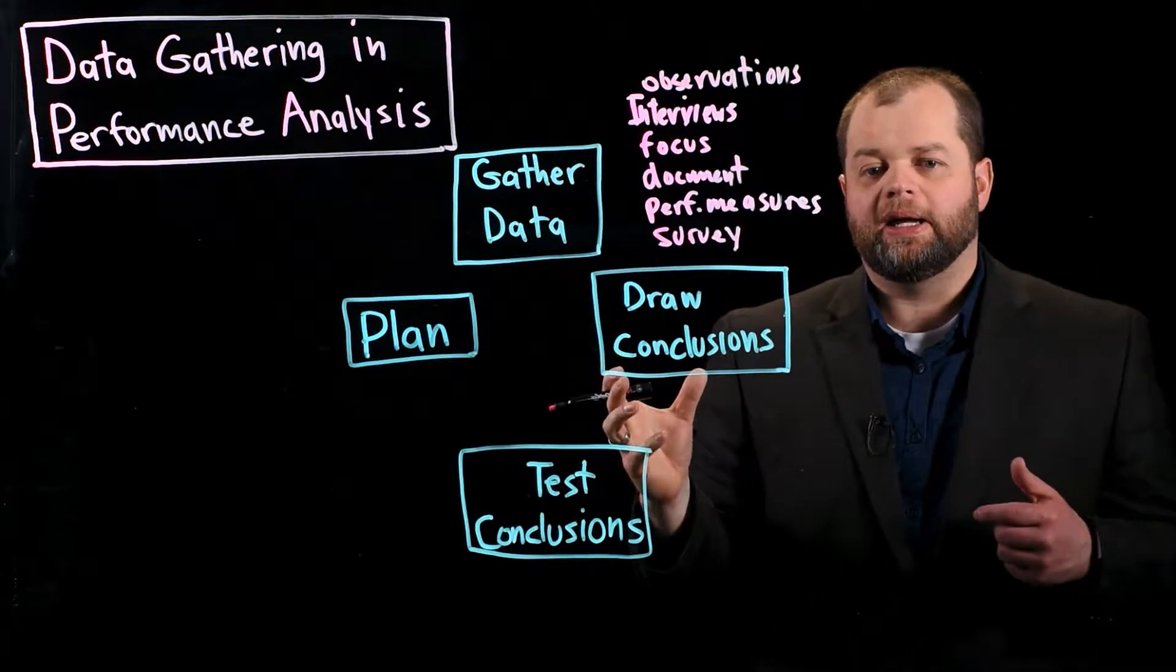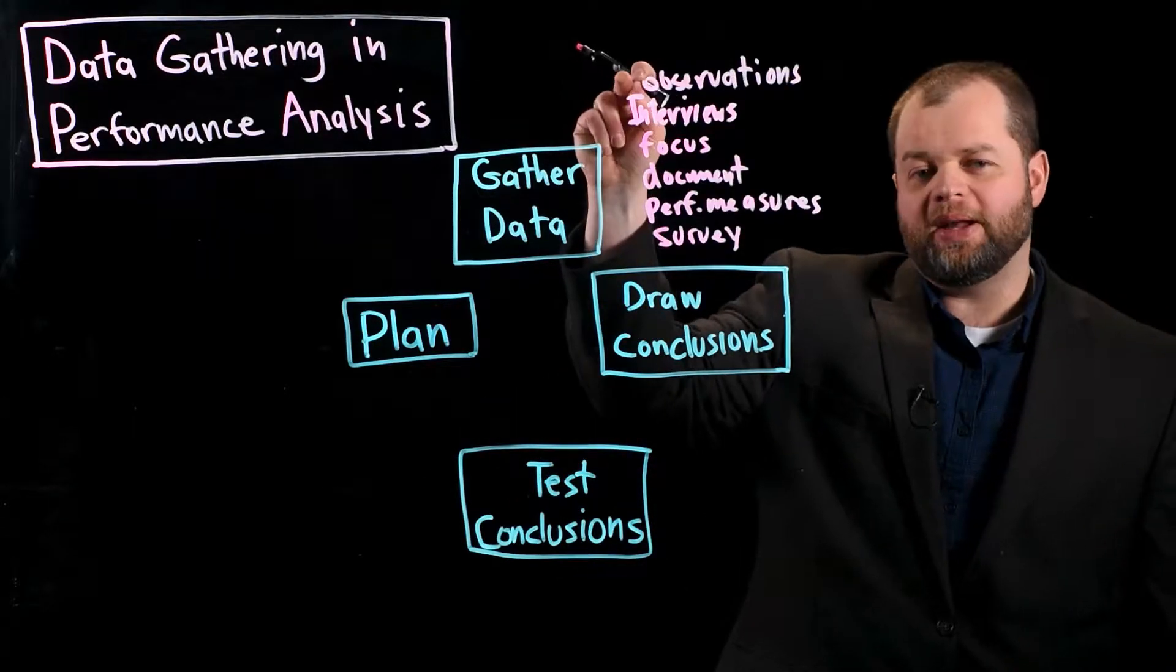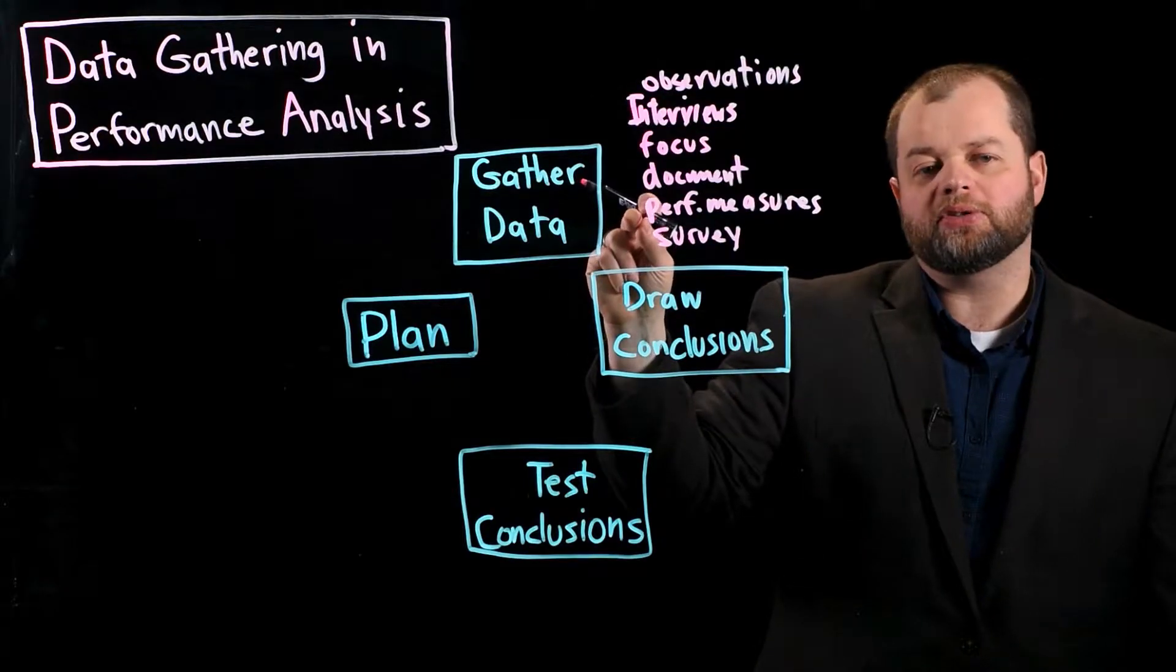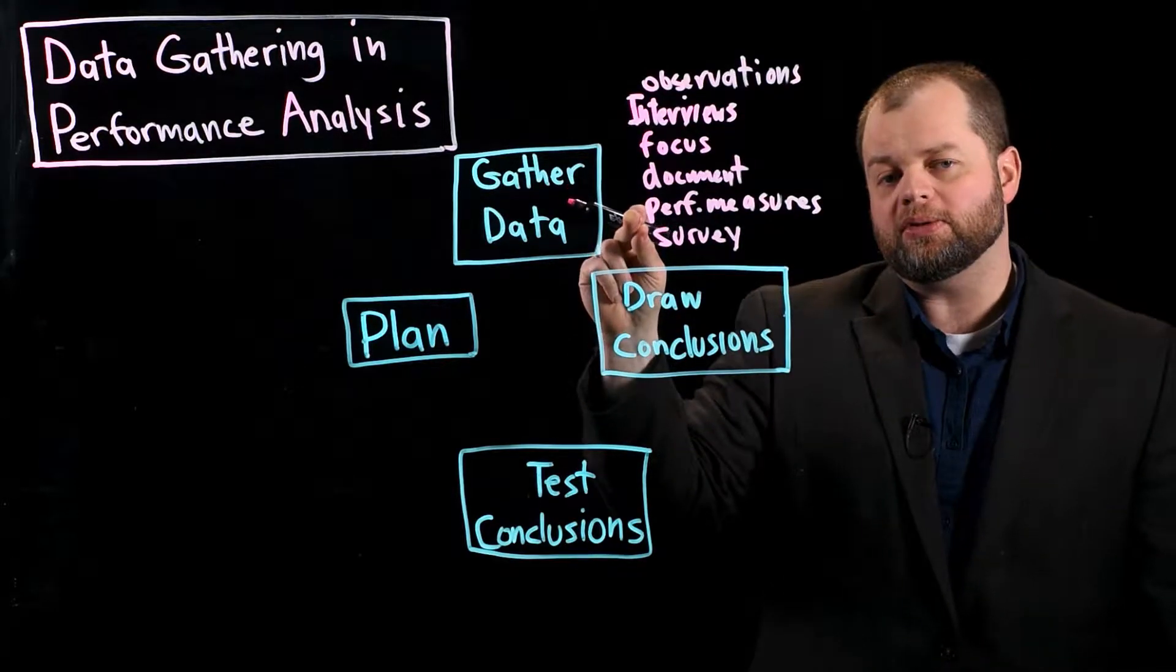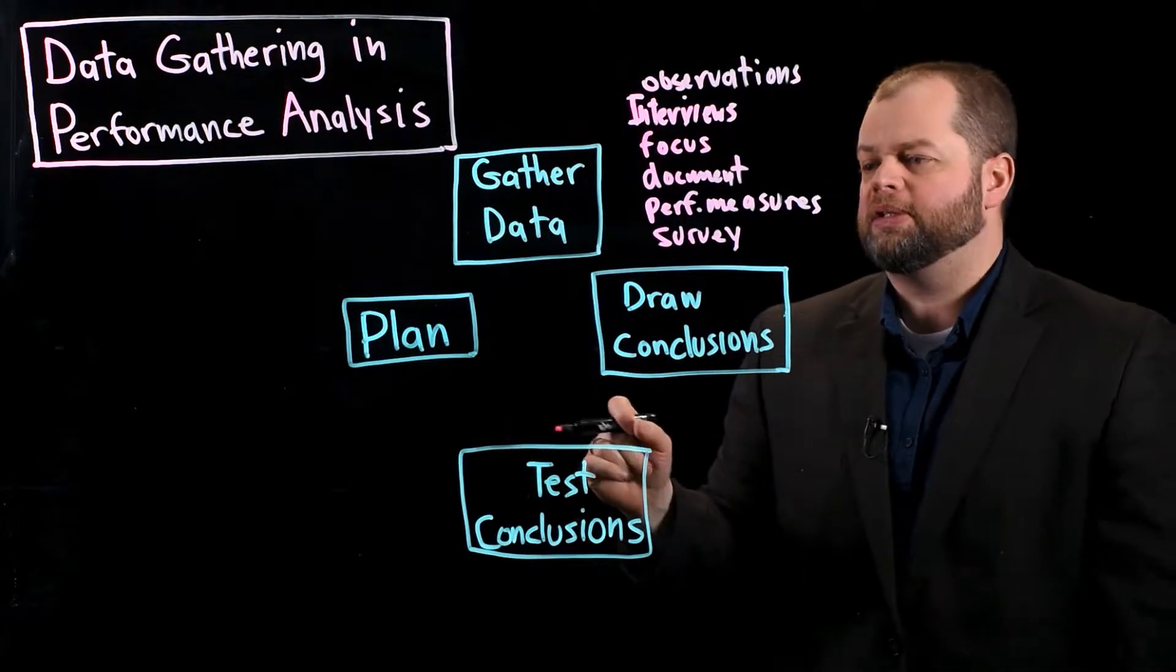So if it's like an assembly line scenario, you probably better do some observations and really understand what's going on. Maybe look at the performance measures and how they're actually performing against those measures. This will help you get a sense for what's going on and see the environment in which this performance is taking place.